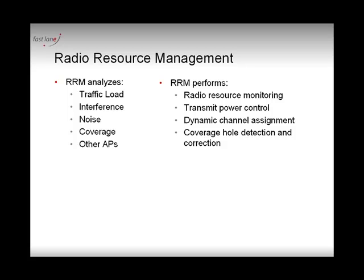These two things look a little bit the same, but they are not exactly the same. RRM AutoRF — the management of the power level on the way down and the channels — is performed at the group level, whereas the coverage hole detection and correction is performed locally at the controller level.